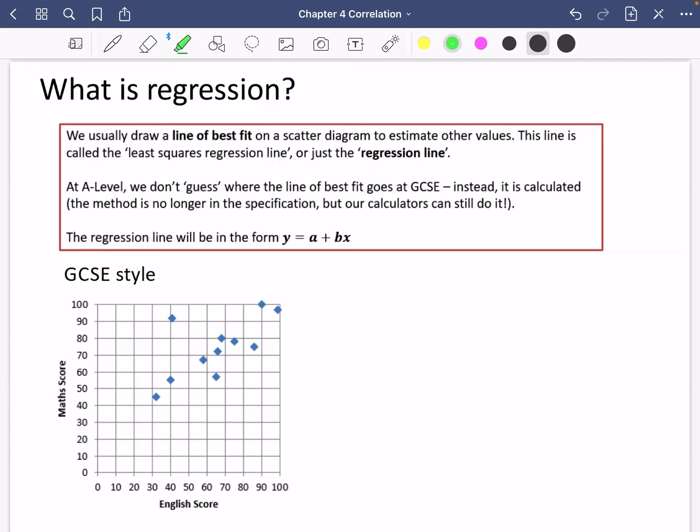This line is called the least squares regression line or just the regression line. So basically, the line of best fit that we draw has a proper name. If you ever see the regression line, we're really just talking about the line of best fit.